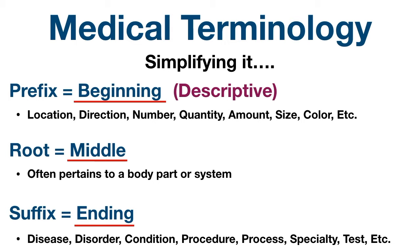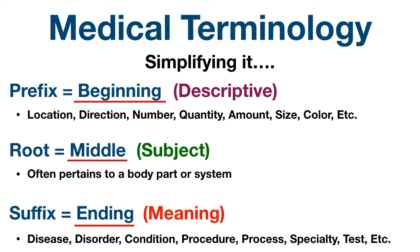Next, we have the root, and it forms the middle of the word. The root provides the subject of the term, and it often pertains to a body part or system. Finally, we have the suffix, and it forms the end of the word. The suffix brings meaning to the term, and it might indicate a disease, disorder, condition, procedure, process, specialty, or test.